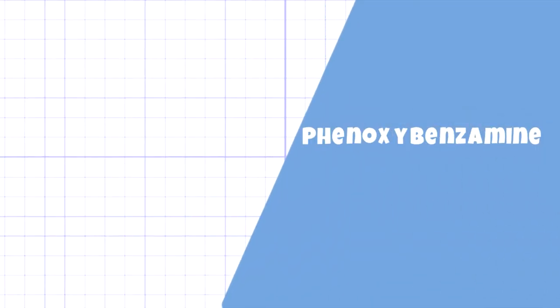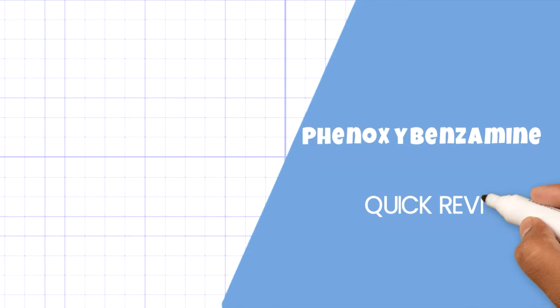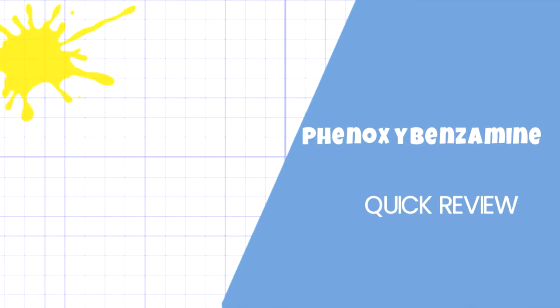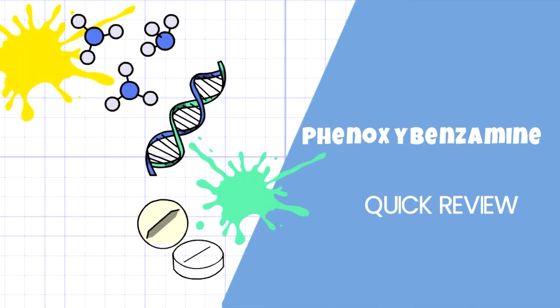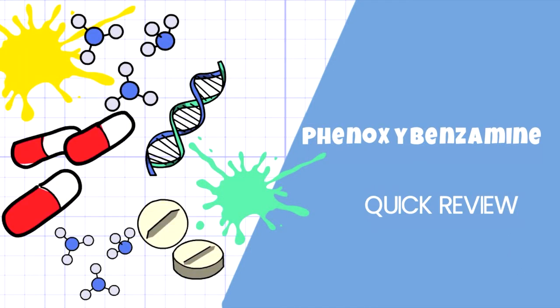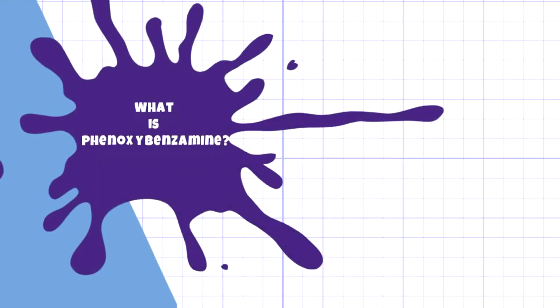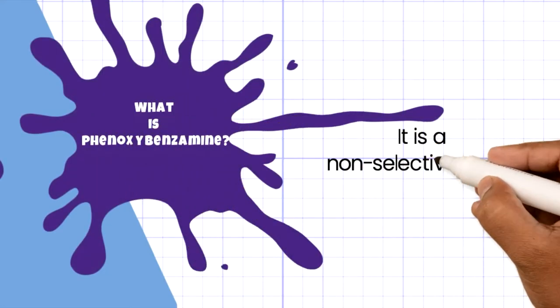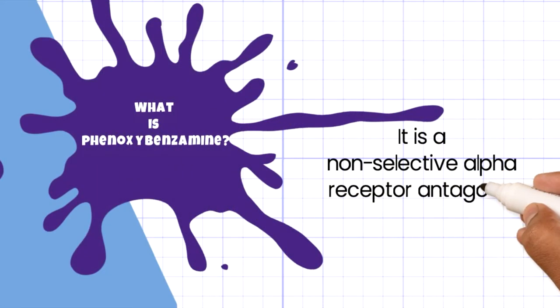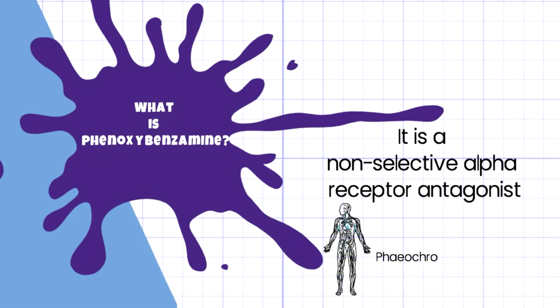In this video we are going to see a quick review of the drug phenoxybenzamine. Phenoxybenzamine is a non-selective alpha receptor antagonist. It is mainly used in the condition of pheochromocytoma.